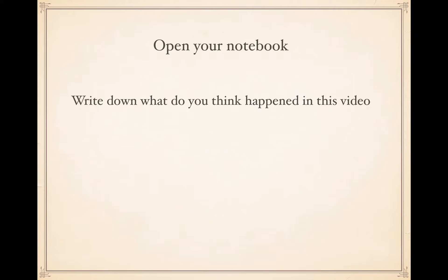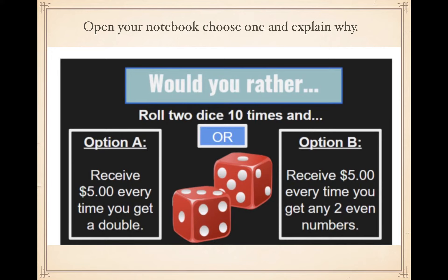One more question: open your notebook and choose one option, explaining why. Option A: receive five dollars every time you get a double — one-one, two-two, three-three, four-four, five-five, or six-six — when rolling two dice ten times. Option B: receive five dollars every time you get any two even numbers. Think about which you'd rather choose. Pause the video before I show the answer.